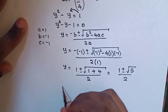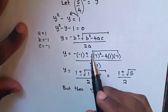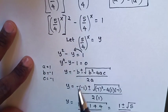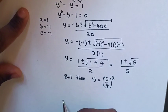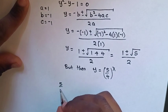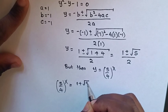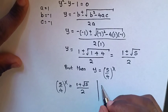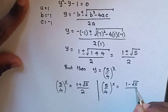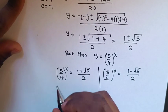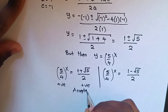From here we get the values of y. Recalling that y is equal to (5 over 4) bracket power x, it will be (5 over 4) power x equals (1 plus square root of 5) over 2 for the positive case, and (5 over 4) power x equals (1 minus square root of 5) over 2 for the negative case. The left side is always positive, so only the positive case is accepted and we continue to solve that side.